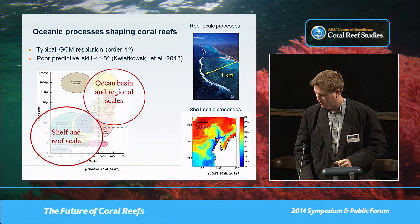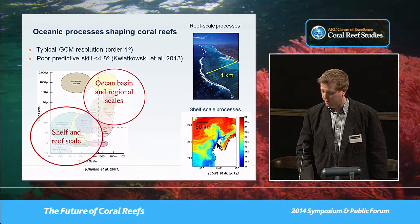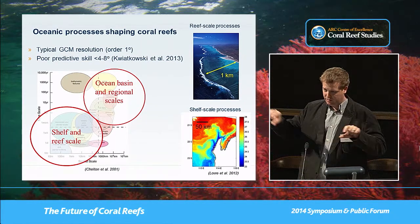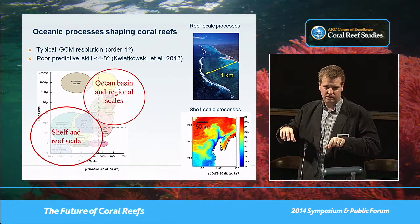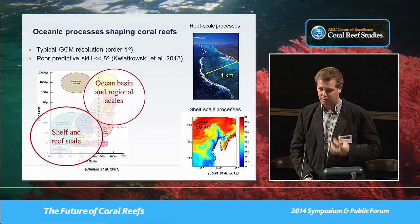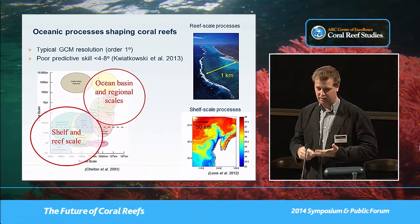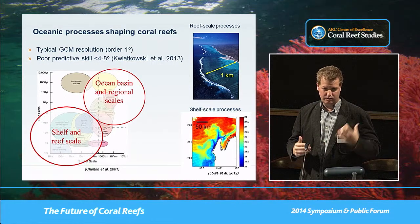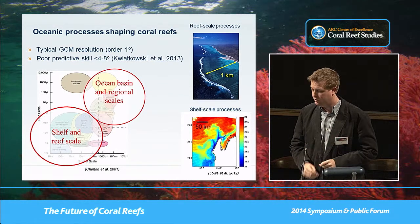Ningaloo reef is along the Northwest Cape region. There are upwelling events during summer where the temperature in a thin strip about one to five kilometers along the coast is actually five degrees cooler. There are also important shelf processes that can't be picked up by global circulation models or products like NOAA's coral reef watch SST products that don't resolve down to sub-kilometer scales.